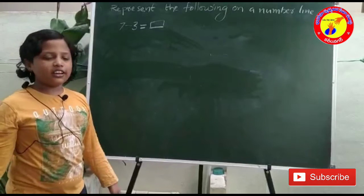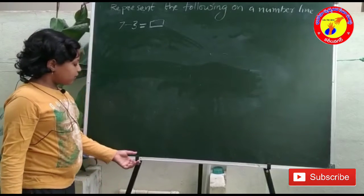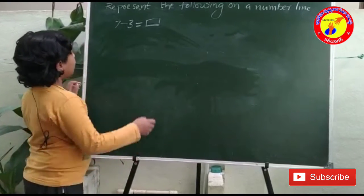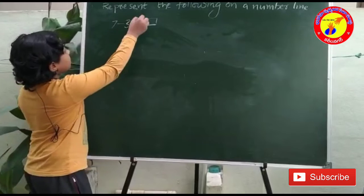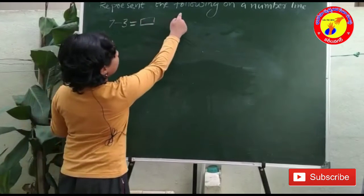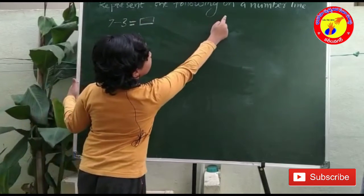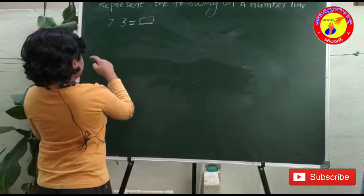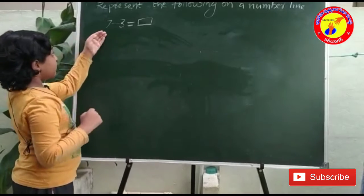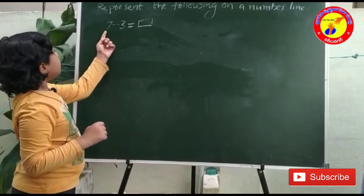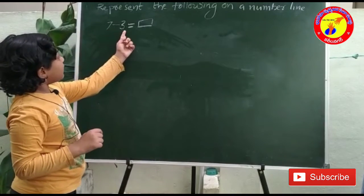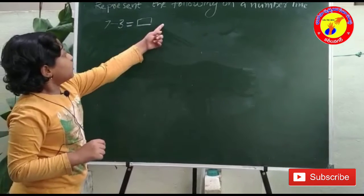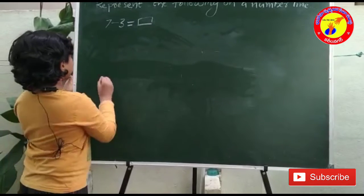Good morning, one and all. Today, we discuss about: represent the following on a number line. Given that, 7 minus 3 is equal to what?